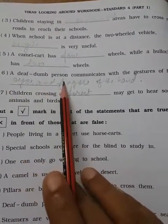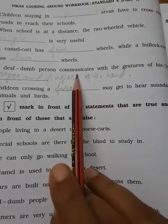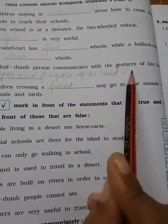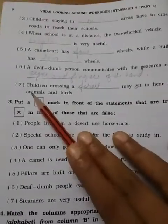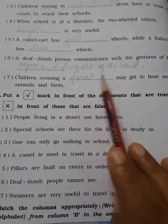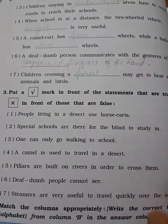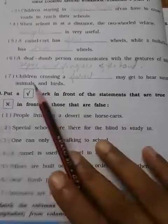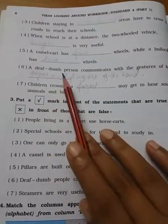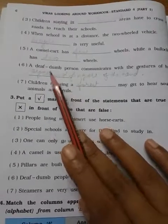A deaf-dumb person communicates with the gesture of his or her eyes and fingers of the hand. Means they are using their fingers to show, to understand the words. Deaf and dumb, the person who are not able to see or speak.